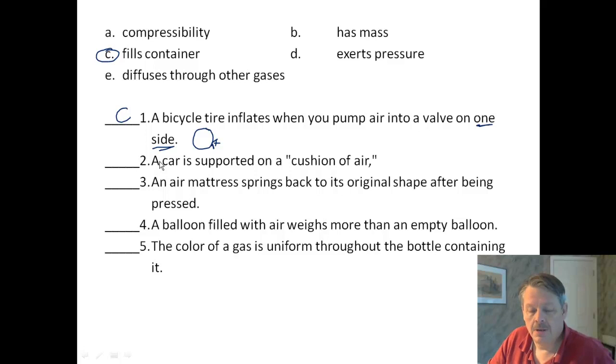Number two: a car is supported on a cushion of air. The cushion of air is holding the car up, so you could say that is pressure. You could also say it's compressibility because that air is actually being compressed underneath the car. So it's kind of both A and D.